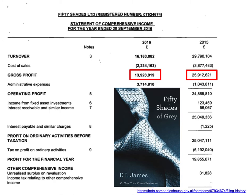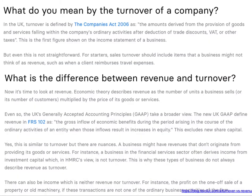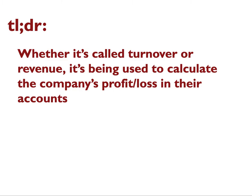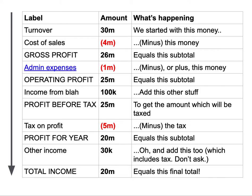The first thing to point out is that the first row can be either turnover or revenue. There are differences between those but it's not particularly important for our purposes. Essentially what we're talking about is money that comes in at the start that's being used to calculate the company's profit or loss. What you can see in a cash flow statement is money coming in at the top and then essentially being subtracted from or added to as you go down.